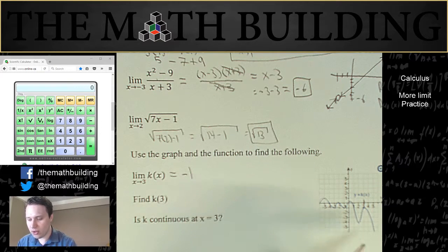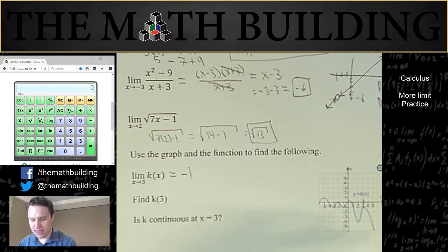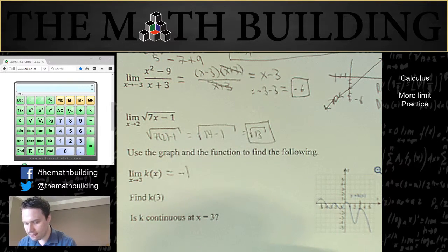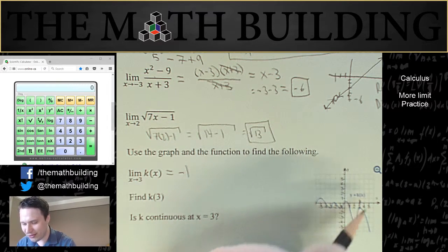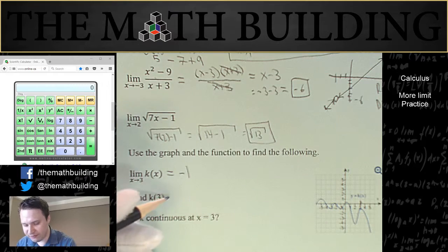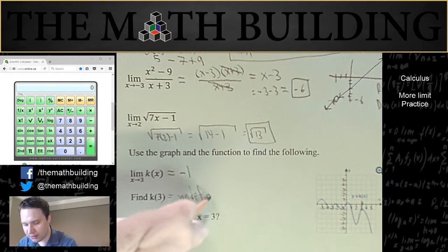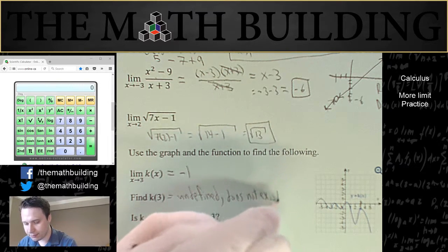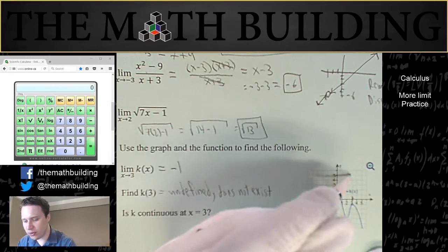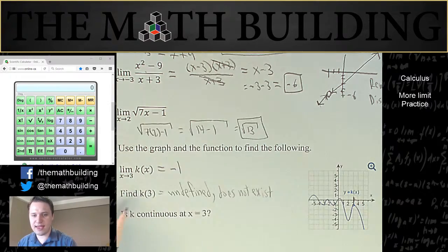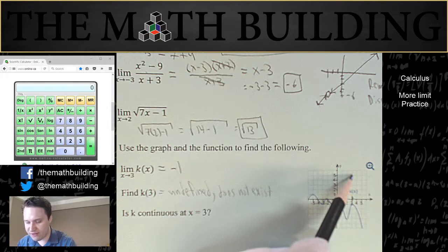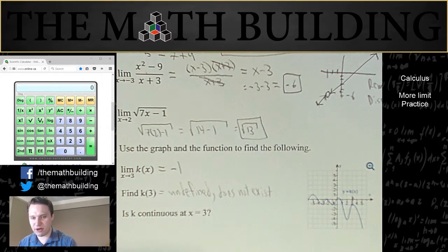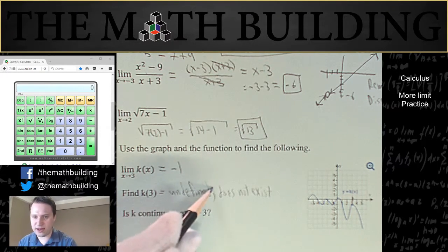Find k of 3. Okay, what actual value does it take there? The value is going to be nothing because we don't have a value right there. And so the value of that is not going to be defined. It's undefined. It does not exist. So you'll notice if there was a point here, like say there was a dot right there, then k of 3 would have equaled 5 if there had been a dot at 5 or it would have equaled negative 4 if there had been a dot at negative 4. But there's no value at that point on the function. So we just say that it's undefined or that it does not exist.